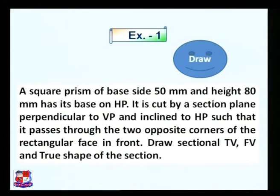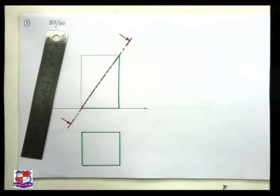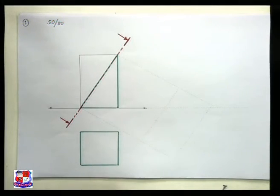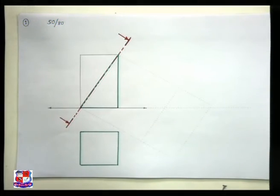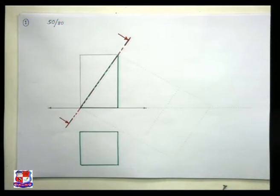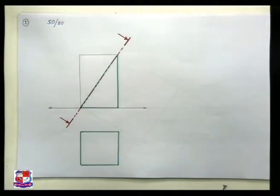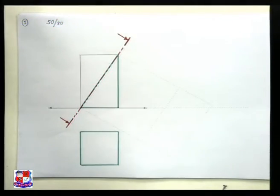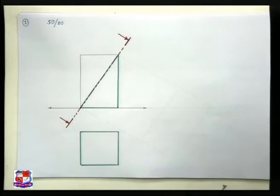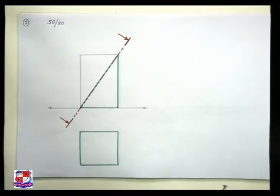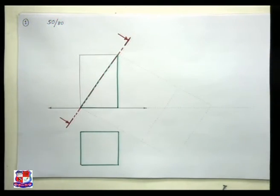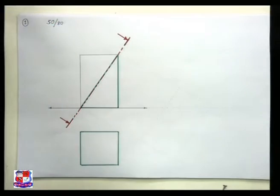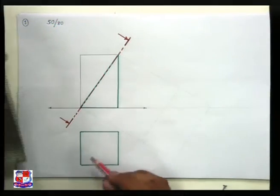A square is given of side length 50 mm. The first step is to draw a square below the XY line having side length 50 mm. After drawing this square, take projection from the top view and draw the front view. As it is a square prism, the front view would be a rectangle and the height of this rectangle is 80 mm.